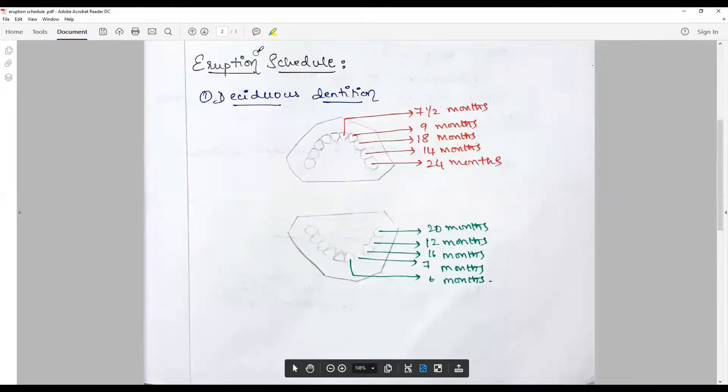The eruption schedule for deciduous dentition: this is the upper jaw, lower jaw, starting at about six to seven months. Six months is the lower central incisor, upper central incisor seven months, followed by lower lateral at seven months, upper laterals at eight to nine months.